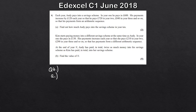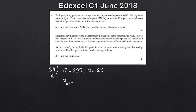Part A: Andy is paying into a savings scheme. In year 1 he pays in £600, so A equals 600. His payments increase by £120 each year - £720 in year 2, £840 in year 3 - so the common difference D equals 120. We're asked how much he pays in year 10. Using A10 equals A plus (N minus 1) times D: 600 plus 9 times 120 gives us £1,680.